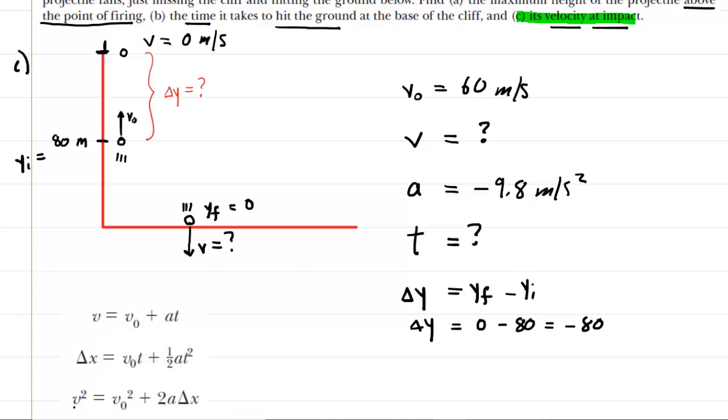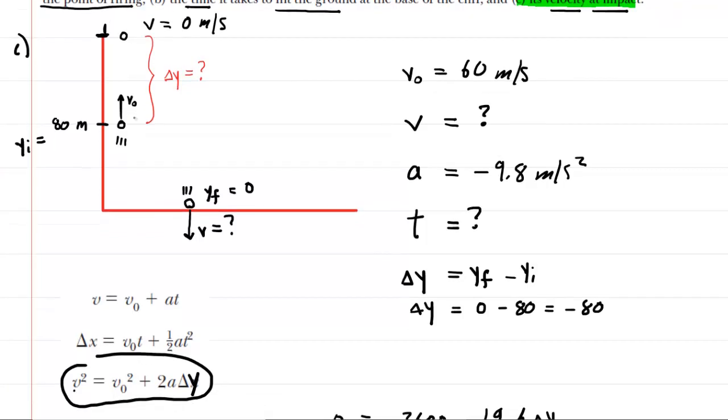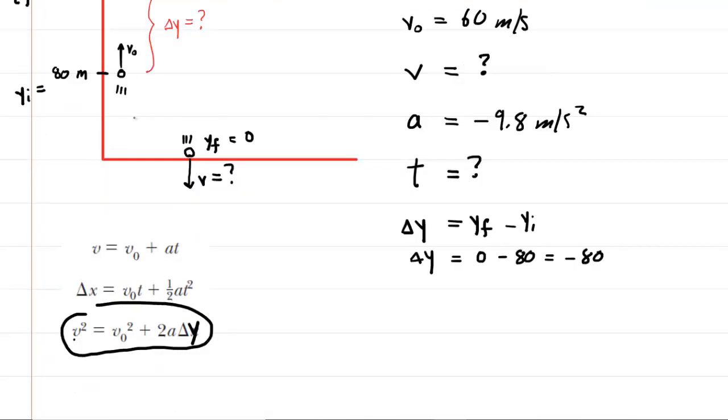And it turns out that this equation will be our savior for part C. We'll change this to delta y. We can write down that formula and then begin to plug in the known values. So the final velocity, we are looking for that. So we'll just write v squared. This is equal to the initial velocity, which is 60 meters per second squared, plus 2 multiplied by negative 9.8 multiplied by negative 80.